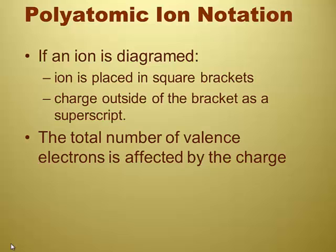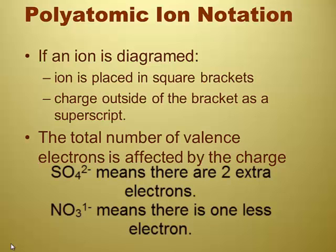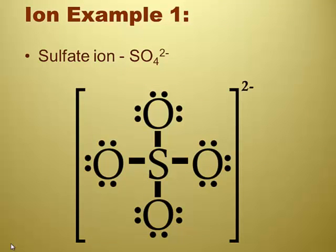If an ion is diagrammed, ions are placed in square brackets. The charge is outside of the bracket as a superscript. So it's just like doing a single ion, a single atom ion. Yes, like you showed earlier, it's just that you've got a polyatomic. The total number of valence electrons is affected by the charge. So if it says it's a two negative charge, you add two. You add two electrons. If it's a one positive charge, you took one away. Okay, that makes sense.